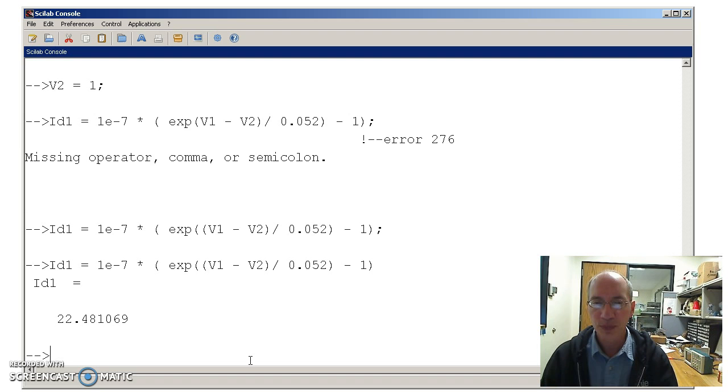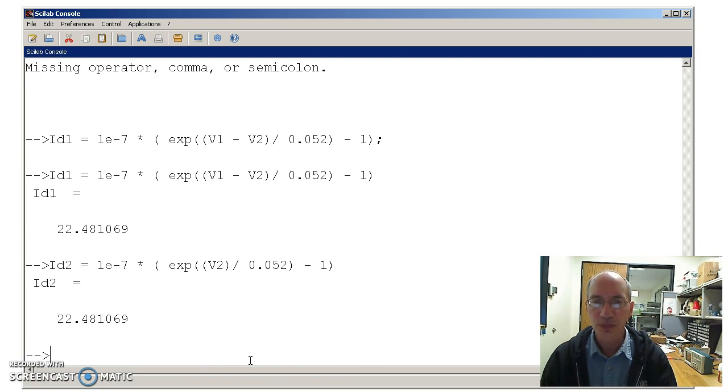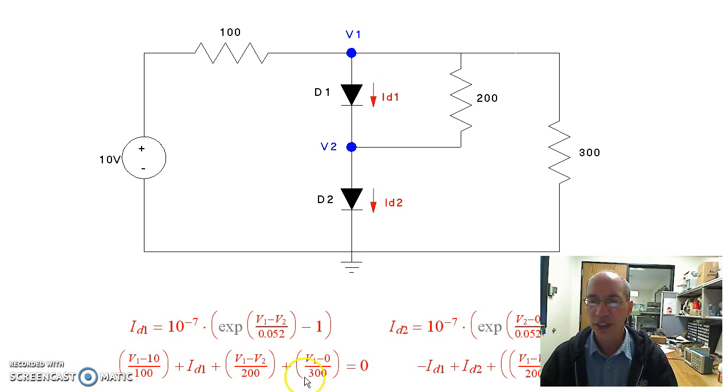And there's the current. Arrow up brings up the previous commands. Equation for the second diode, which is a function of V2. And now I want to write these two equations. We pull this node equation equal to zero. Rather than zero, if I got V1, V2 correctly, the answer would be zero.